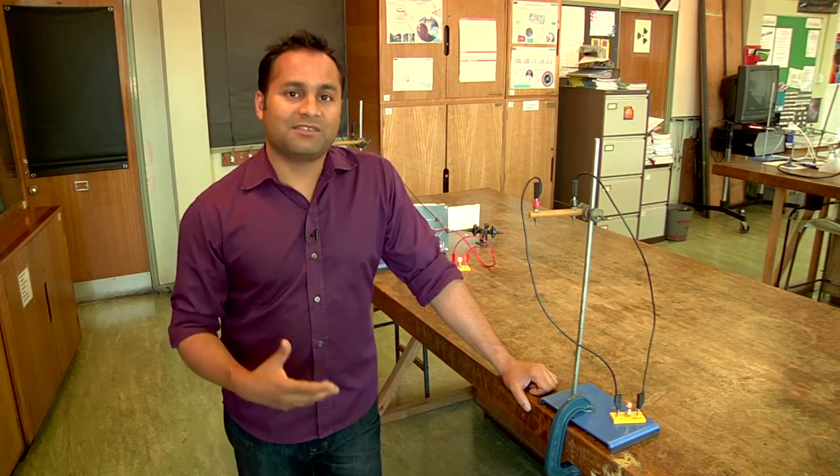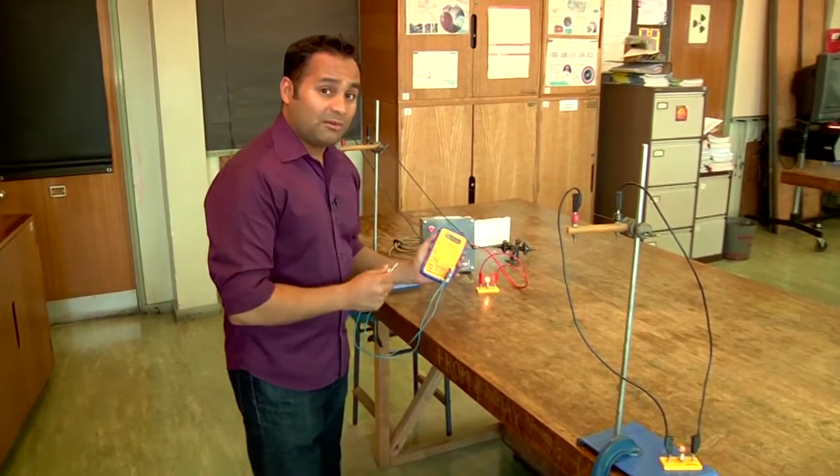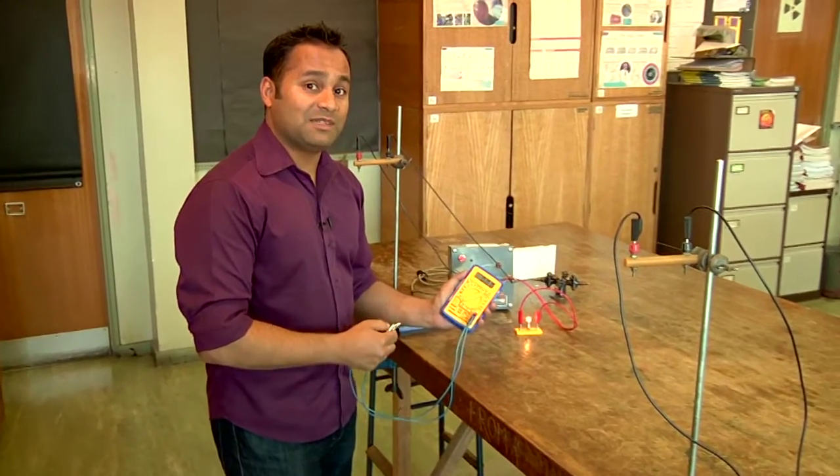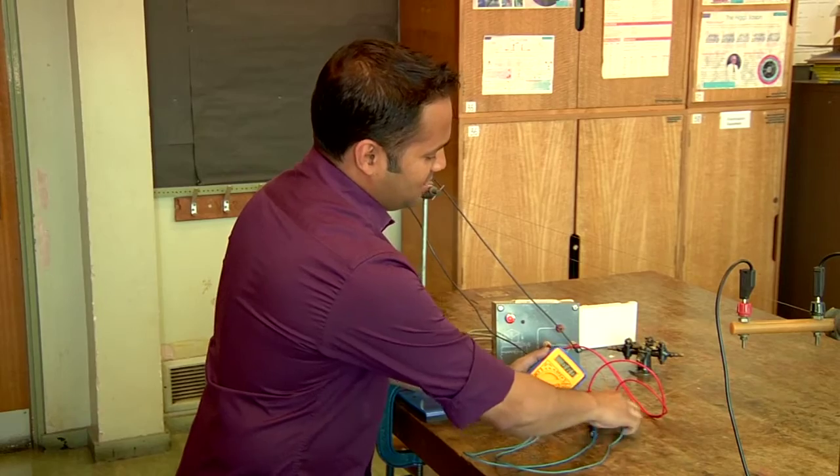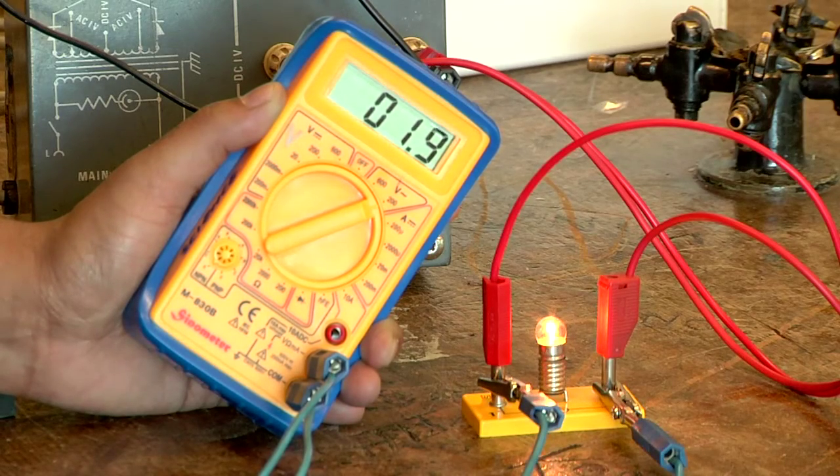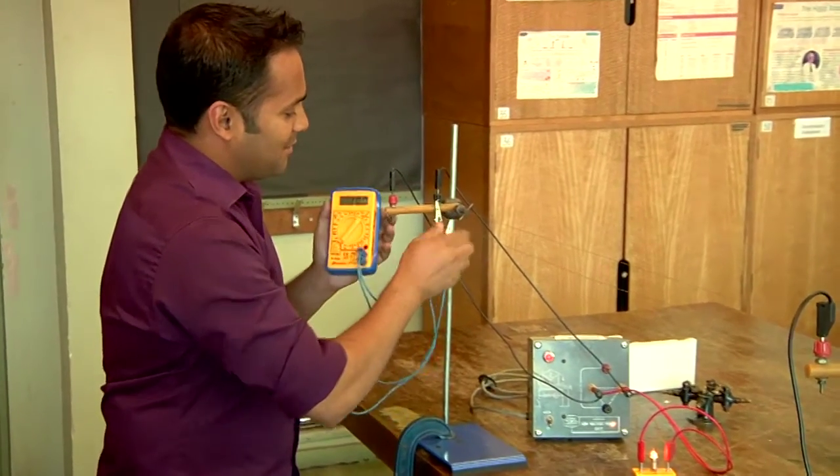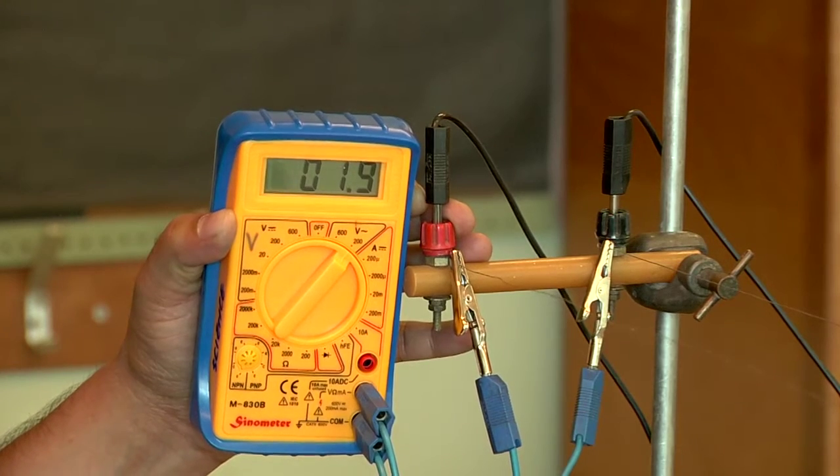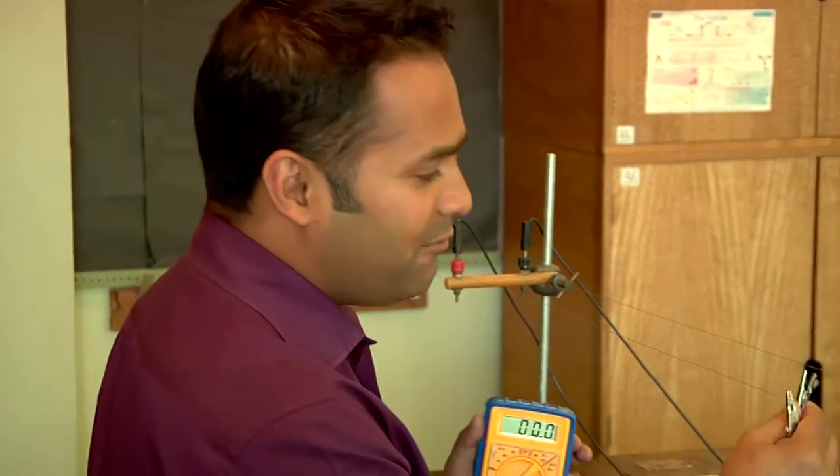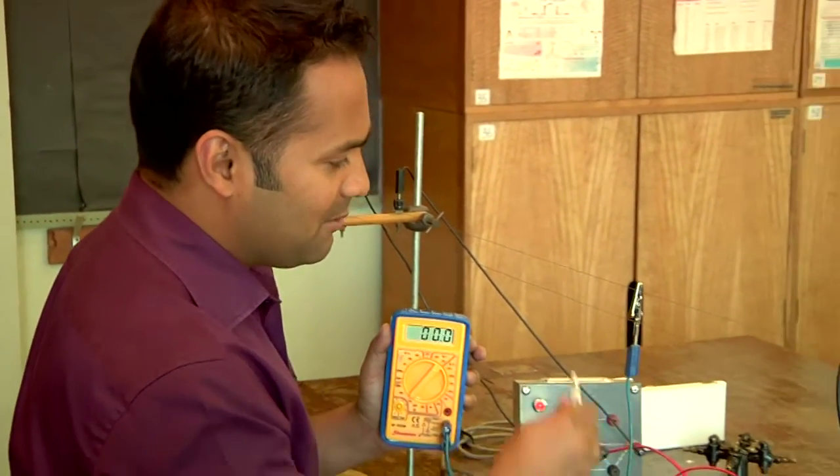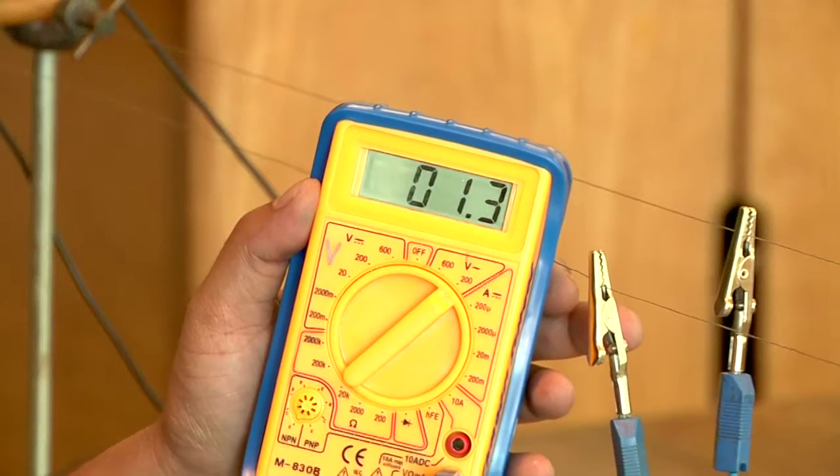To understand this it helps to measure the voltages in the circuit. Now what I've got here is a multimeter that I'm using as an AC voltmeter. If I connect it across the first bulb I get a reading of 1.9 volts. If I now connect the voltmeter to the power cables I've got a potential difference between them of 1.9 volts.